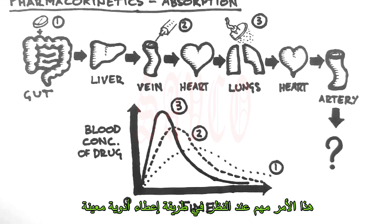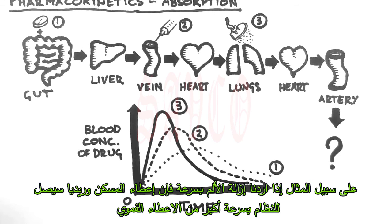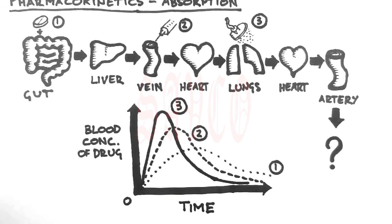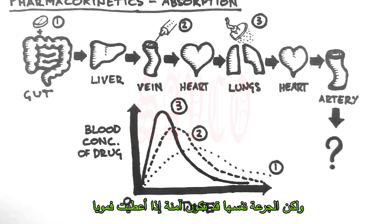You can see how different routes may cause a radically different C-max and T-max. This is important when considering the applications for certain drugs. For instance, if you need pain relief quickly, then an IV analgesic will get into the system much quicker than an oral one. Conversely, a drug which has side effects at high concentrations may be toxic if given intravenously, but the same dose might be safe if given orally.